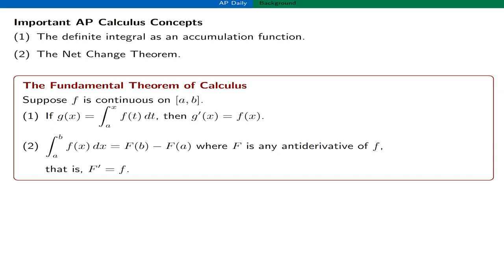Let's start with the FTC. Suppose F is a continuous function on the interval A to B. If G of X is defined as the integral from A to X of F of T dT, then G prime of X is equal to F of X. The second part says the definite integral from A to B of little f of X dX equals capital F of B minus capital F of A, where capital F is any antiderivative of little f. This is the unifying theorem in calculus connecting differentiation and integration.